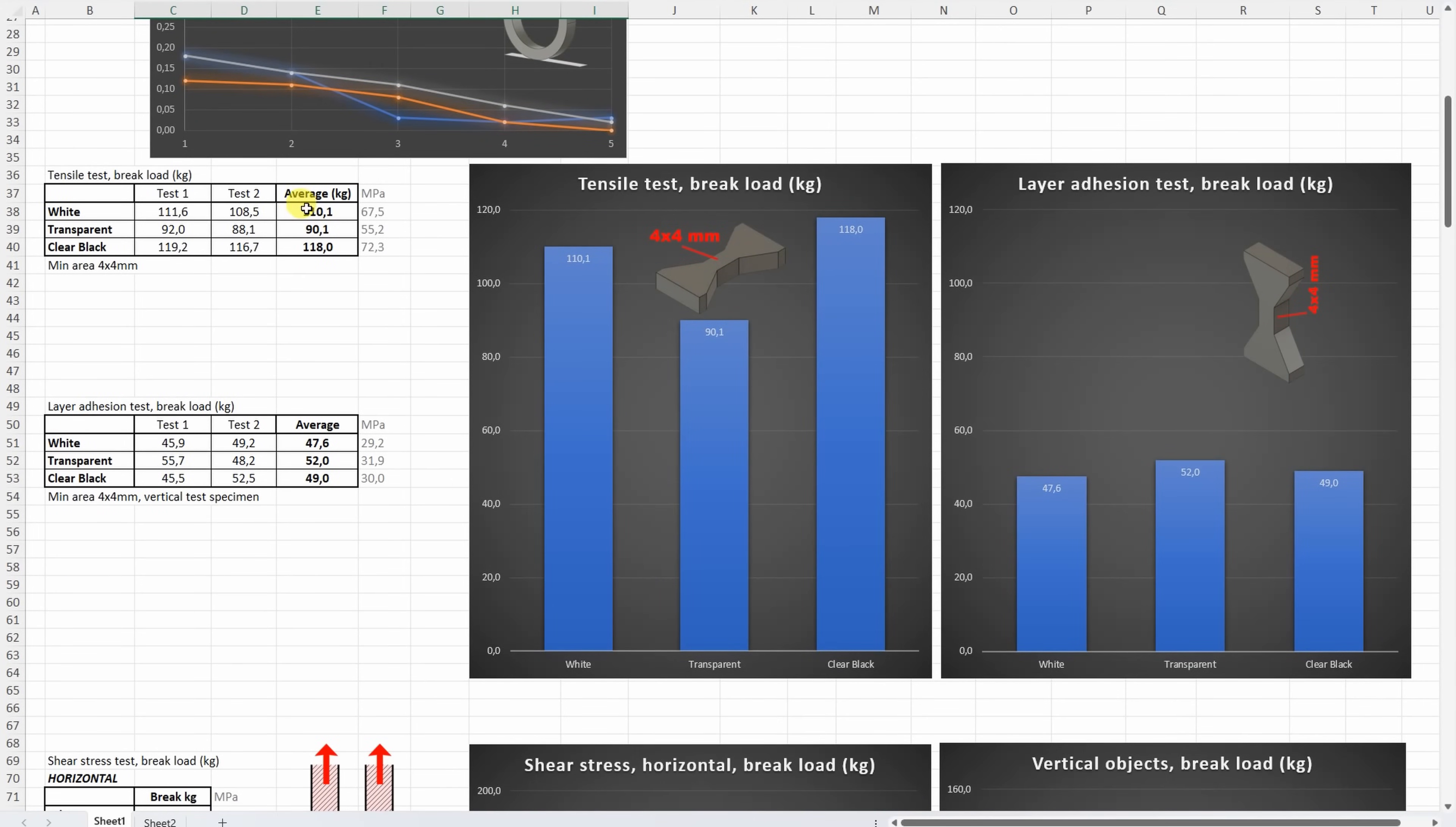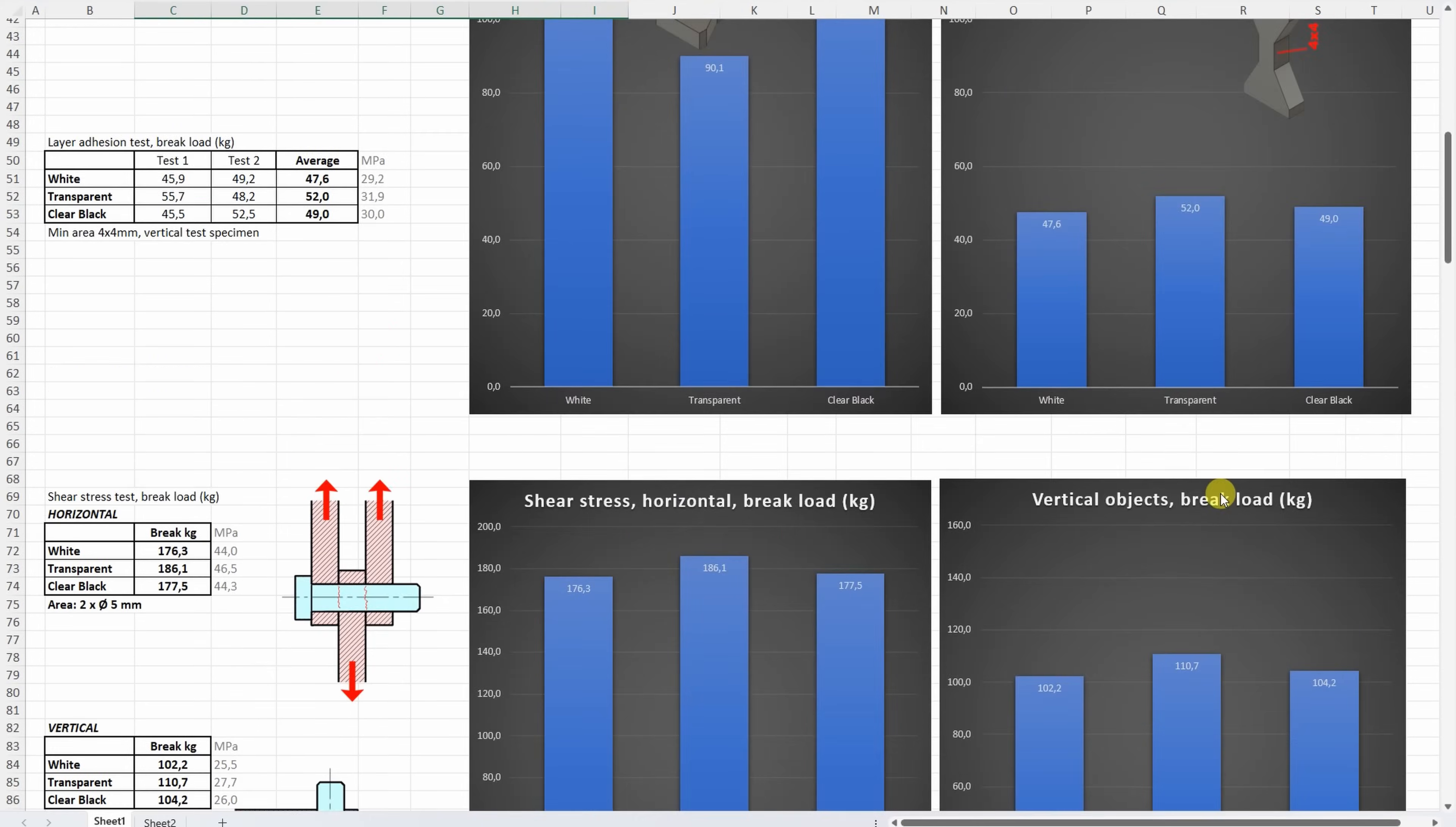Tensile test, a very strong material. Yes, we can see some differences between colors, but in all three cases this is very strong material. On the layer adhesion test, this is also again very strong here. I left this graph to start from 120 so it is comparable. But anyway, this is very strong for the polycarbonate or for any other material, actually.